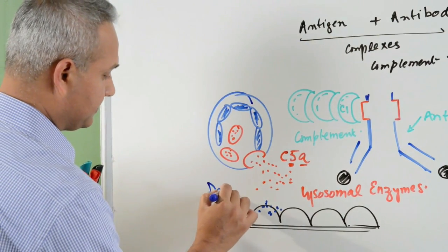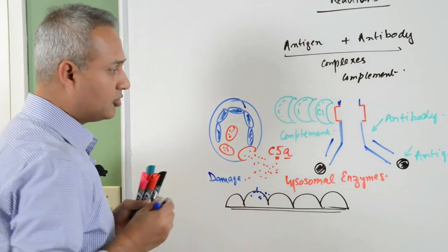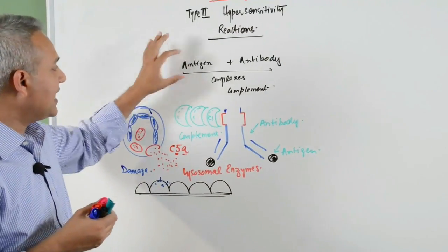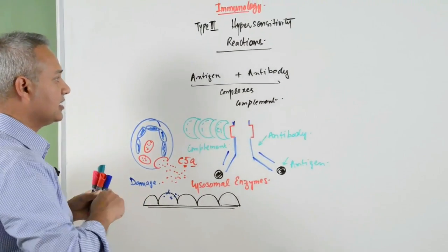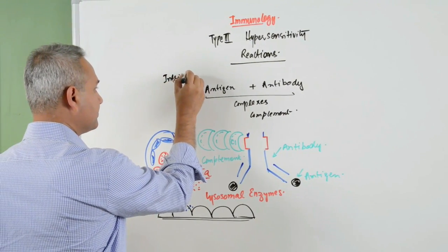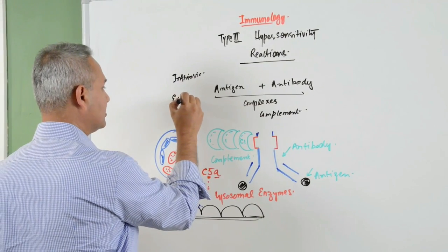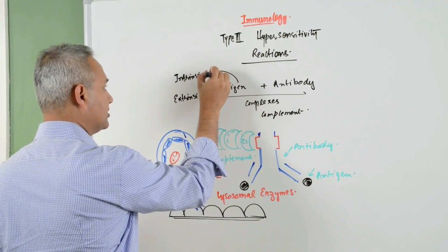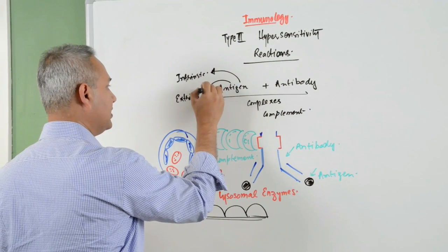Damage would occur. The first question to answer - but before even going there, please remember this very clearly: antigens can be of intrinsic origin or extrinsic origin. Antigens can be intrinsic or extrinsic.